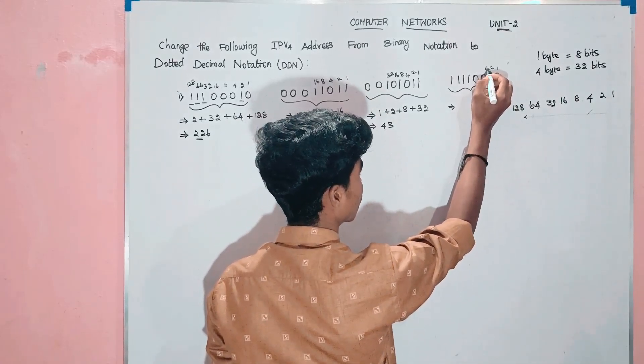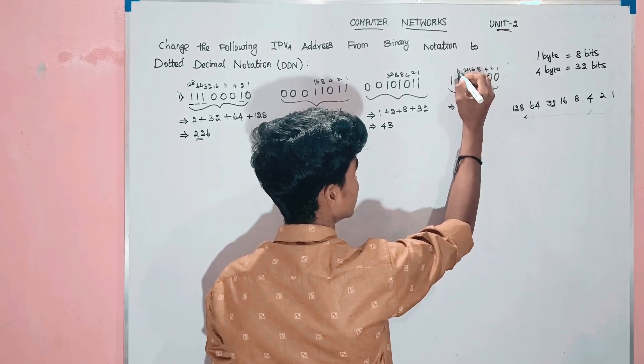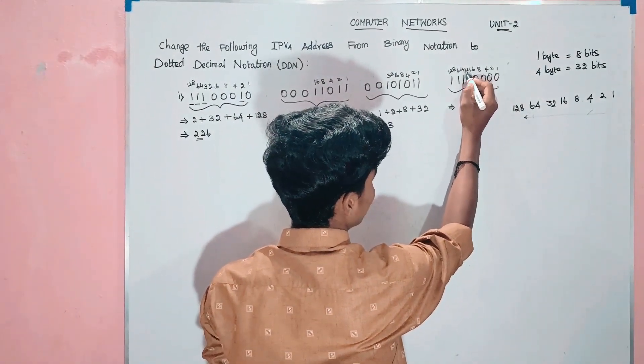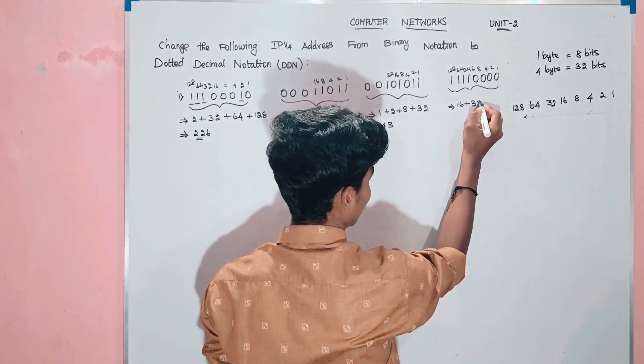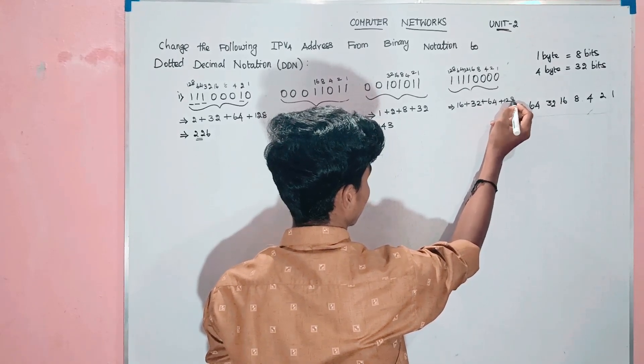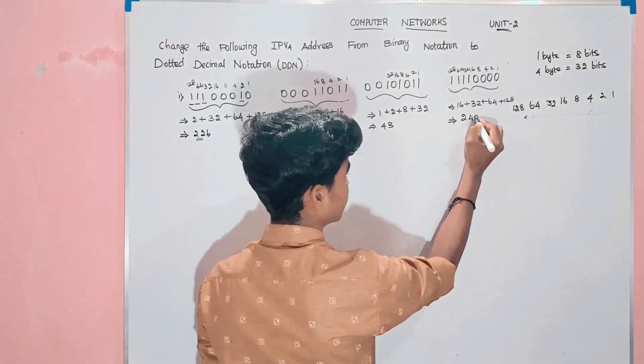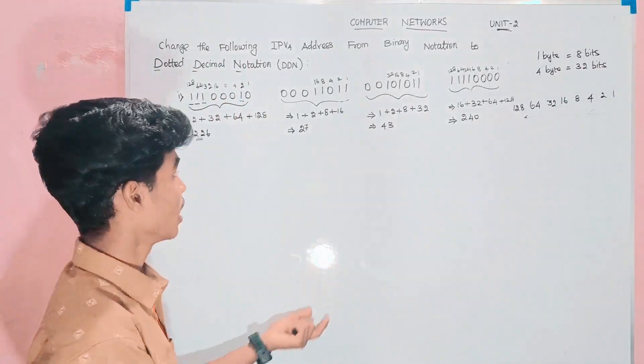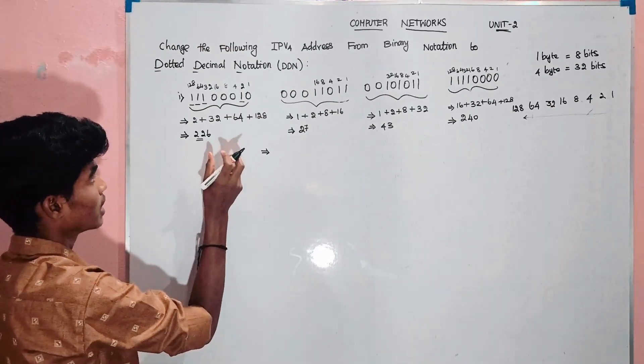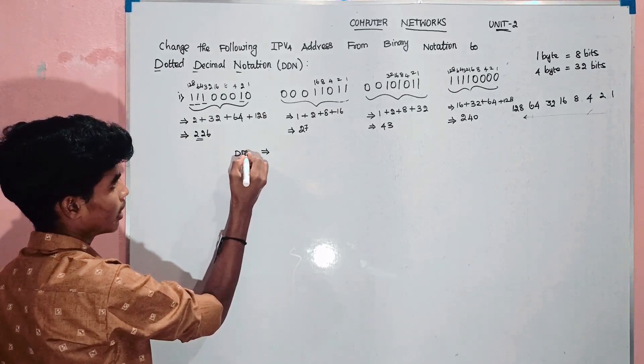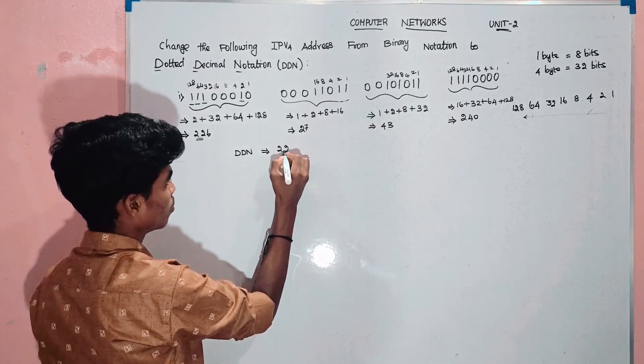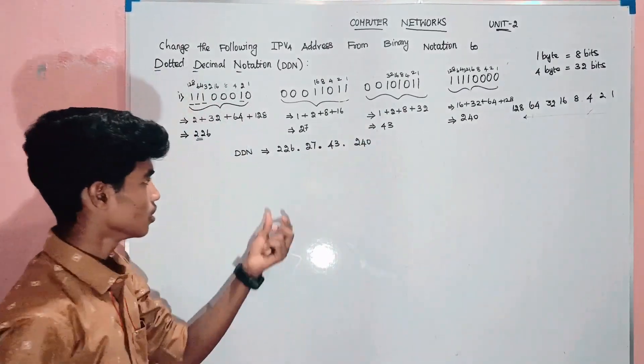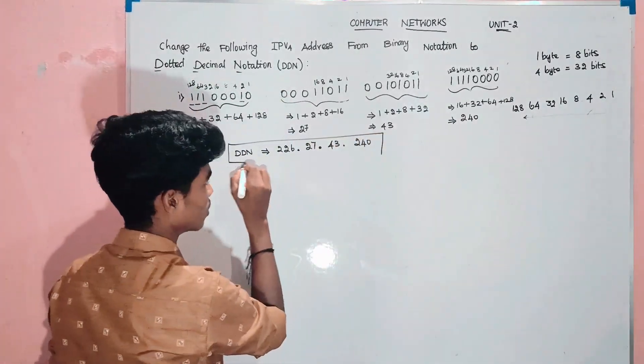So 1, 2, 4, 8, 16, 32, and then 128. So 16, 32 plus 64, 128. 16, 32 plus 64, 128. Value 240. So this is dotted decimal notation.